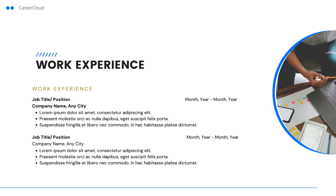Next, list your work experience. Here, you should list your professional roles in reverse chronological order, beginning with your current or most recent job. That way, your latest successes are right at the top of this section. For each job, include your title, the company's name, and the dates you worked there. Then write several bullet points to share your accomplishments while in that position.